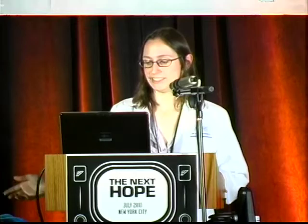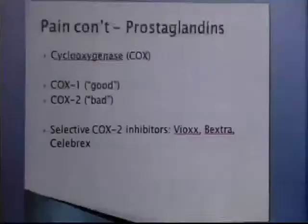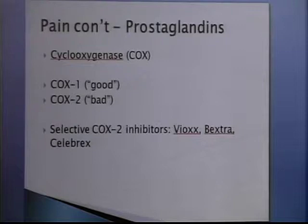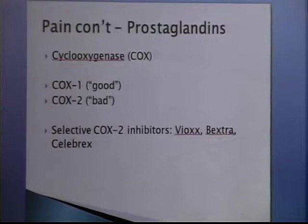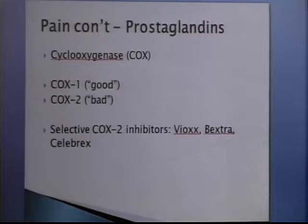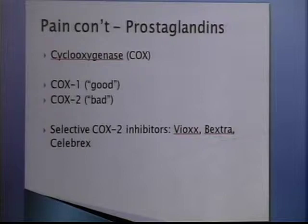A few years ago, some people came up with the brilliant idea of only inhibiting the bad one — COX-2. Usually selectivity in a drug is a good thing because it'll have fewer side effects and be more targeted. Unfortunately, our biochemistry in a lot of ways is like old code — stuff written on top of other stuff that's not necessarily related, and you go to change something and it changes something seemingly unrelated. These COX-2 inhibitors came out: Vioxx, Bextra, and Celebrex. Two of them have been withdrawn from the market, especially Vioxx, because they caused heart problems.